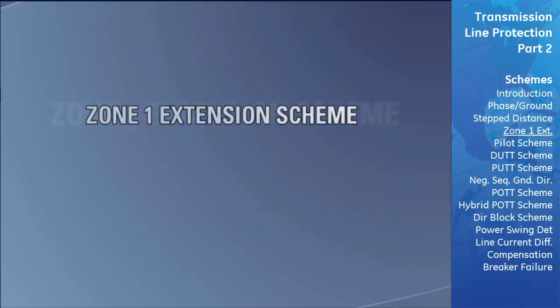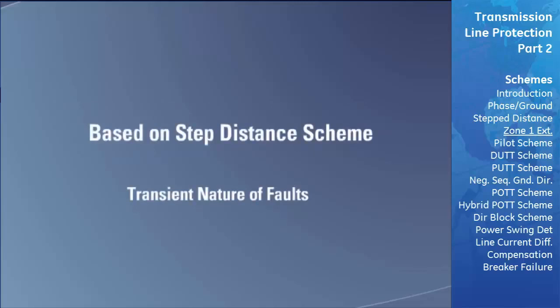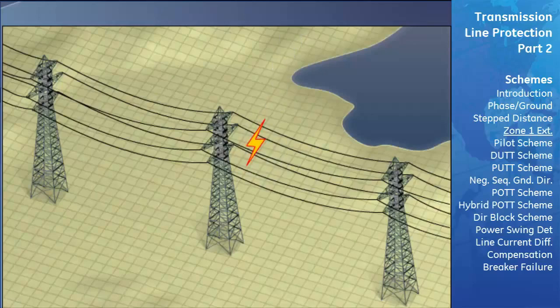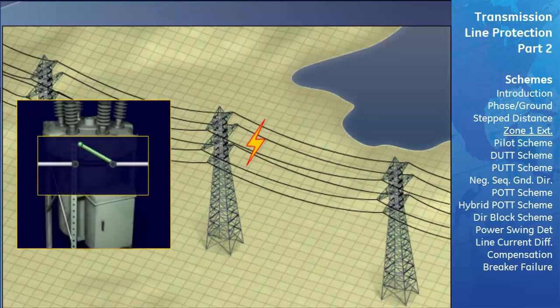The Zone 1 Extension Scheme is an enhancement to the stepped distance scheme. It operates on the principle that most transmission line faults are transient in nature, meaning the fault is not permanent. For example, the most common cause is lightning. If lightning strikes a transmission line, it ionizes the air, reducing resistance between phases and creating a fault. Once the line is tripped and the fault cleared, the ionized air dissipates and the path for current flow is removed. Closing the breaker at this point would re-energize the line and restore power transmission.